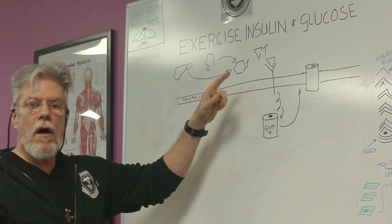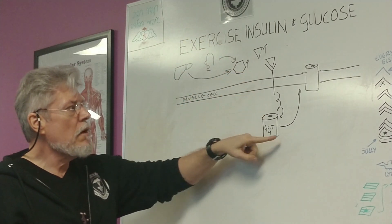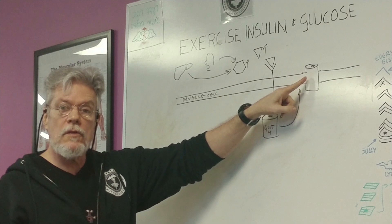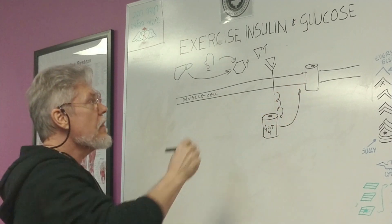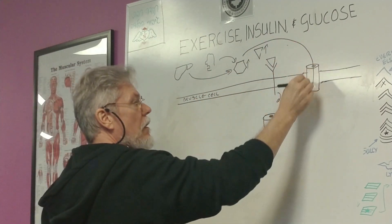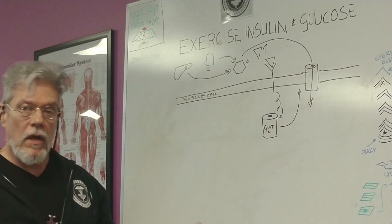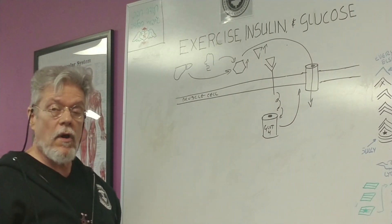And so now, as a response to insulin binding to its receptor, GLUT4 has translocated to the muscle cell membrane. And this will allow glucose to get into the muscle cell where it can be used as energy for exercise.